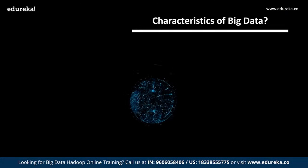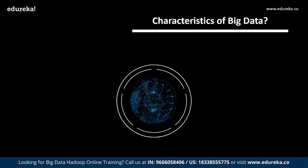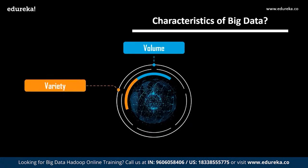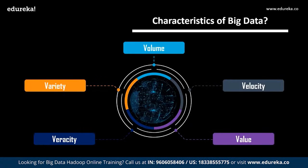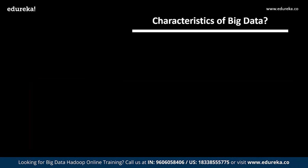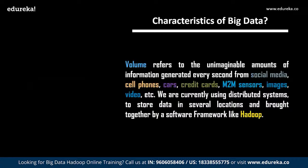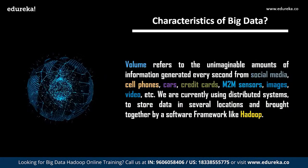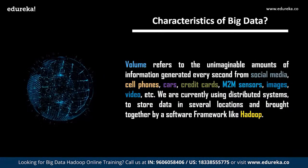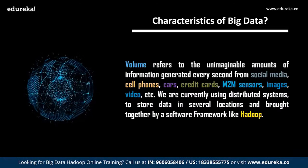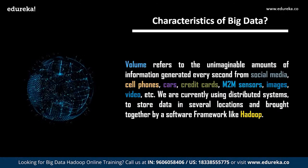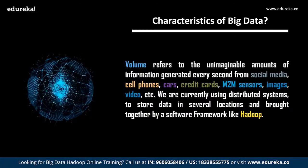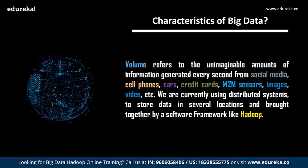The following image depicts the five V's of big data, but as the data keeps evolving, so will the V's. I am listing the five V's which have developed gradually over time. Firstly, volume. Volume refers to the unimaginable amounts of information generated every single second from social media, cell phones, cars, credit cards, M2M sensors, images, videos, and whatnot.